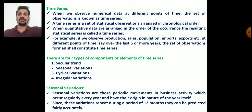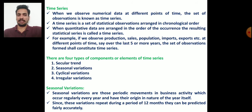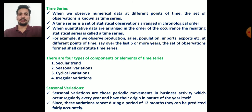There are four types of components or elements of a time series: first, secular trend; second, seasonal variation; third, cyclical variation; and fourth, irregular variation. Since agricultural production is seasonal in nature, here we have to see the seasonal variation.